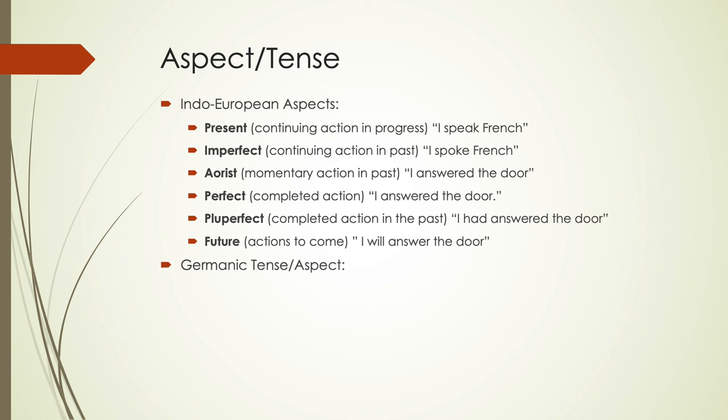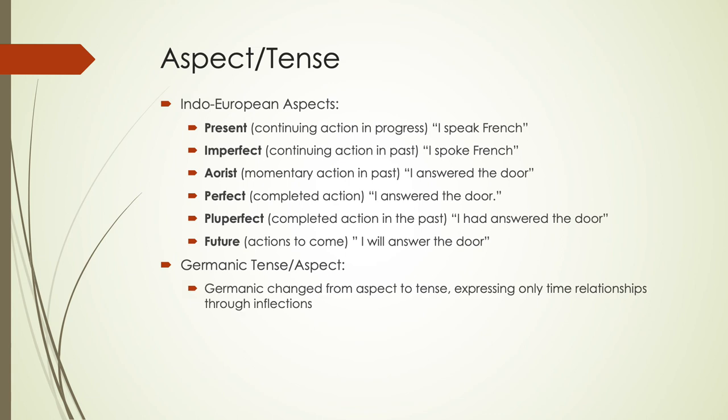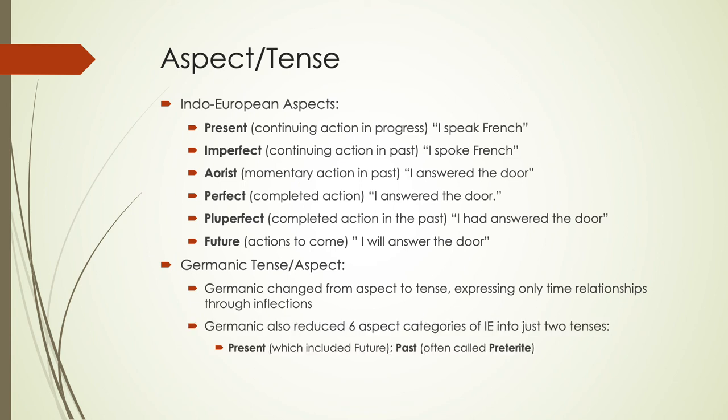By the time we get to Germanic, there is a conflation of the tense and aspect systems. The focus shifts from all those different aspects to focusing on tense — just on time — through inflection. Germanic reduced all of this into just two tenses: present, which included the future, and past or preterite. Our future tense in present-day English is actually not a tense in the linguistic definition because we're using a phrase rather than an inflectional marker.